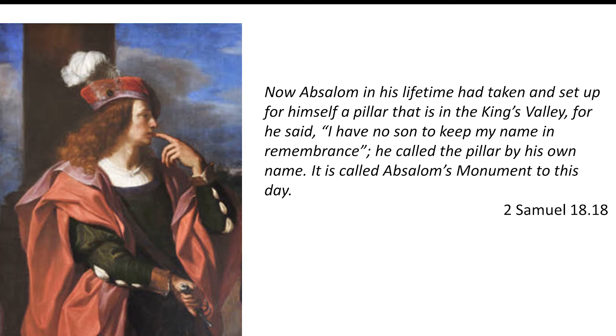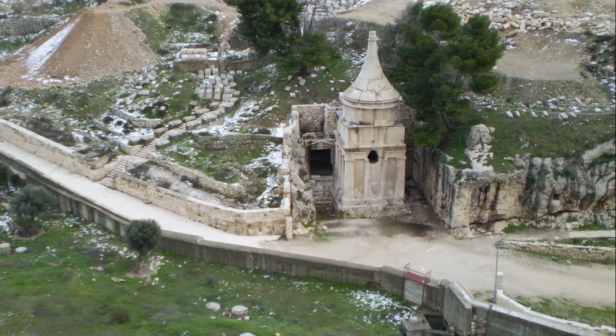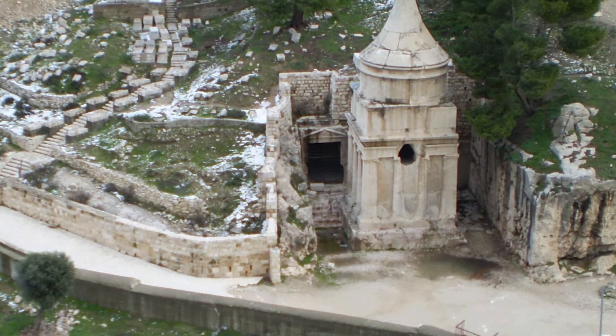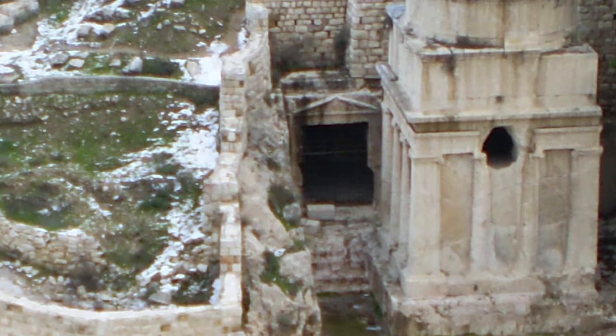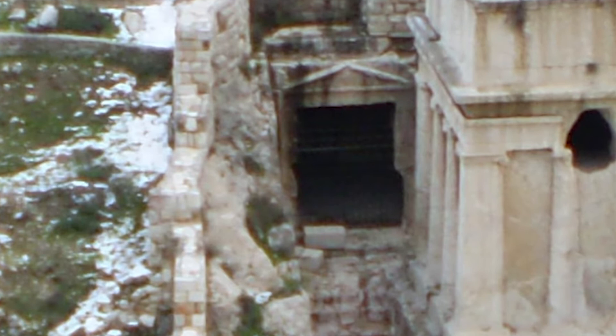According to 2 Samuel 18:18, he built a monument because he had no sons that would continue his name. There's one thing we can be certain about: this was not his tomb because it was actually built almost a thousand years later, just before the time of Jesus. It is really important not to bring our later understandings of the nature of death, resurrection, heaven and hell when interpreting the past.